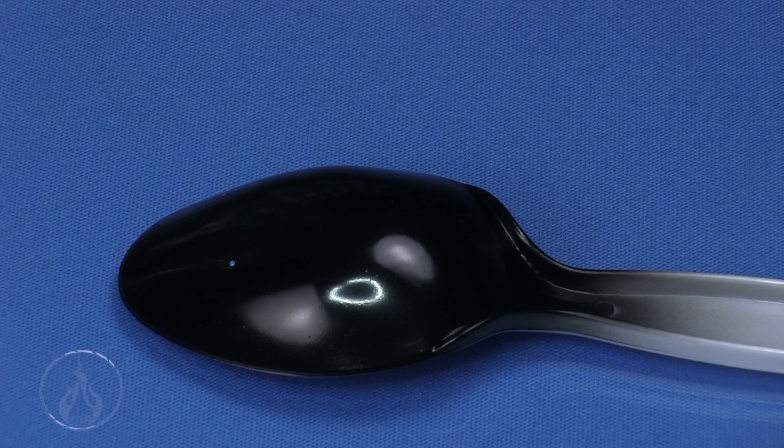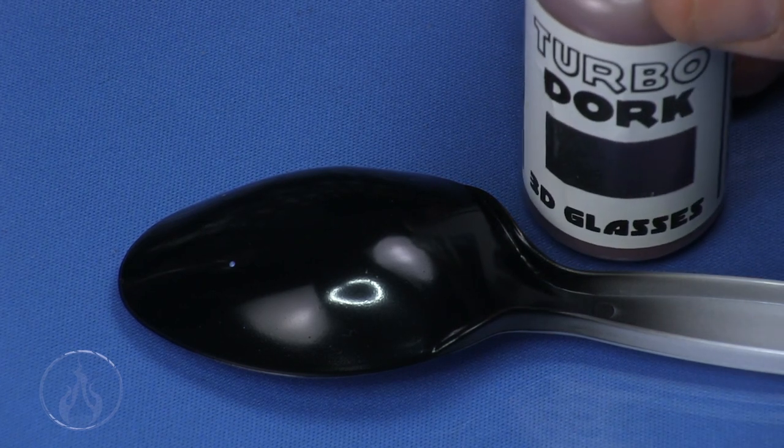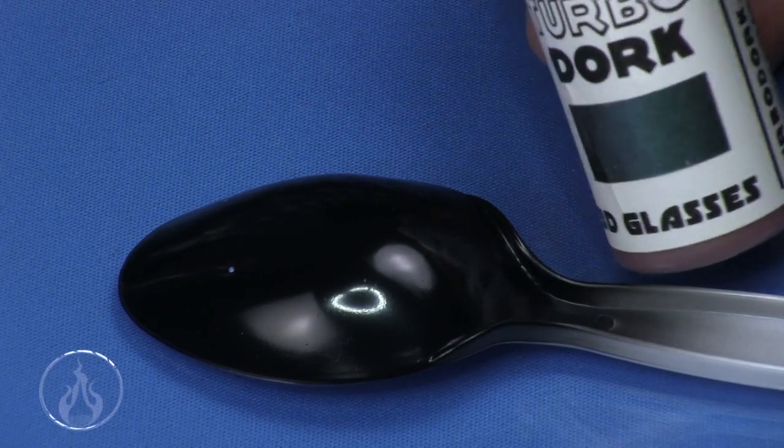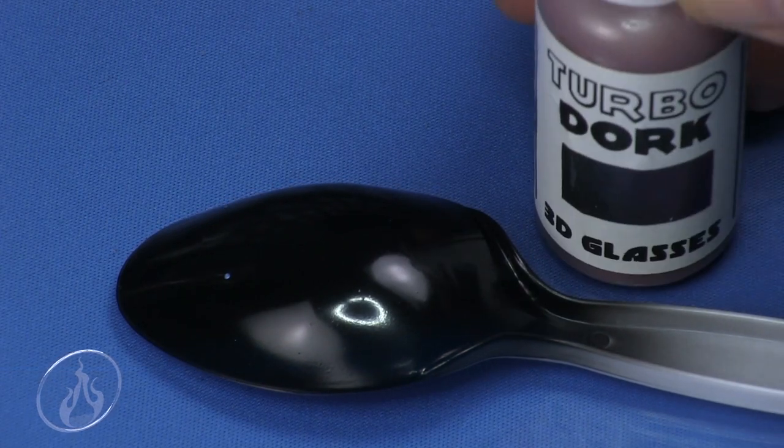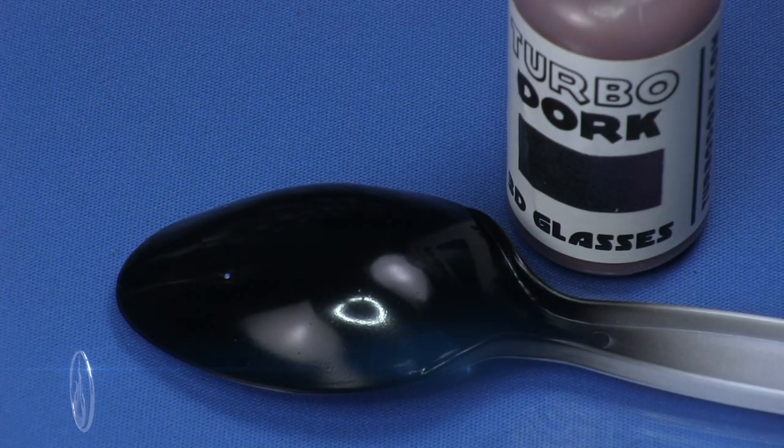Hi there, Chris here with just that tip for you guys. In our continuing look at Turbo Dork paints, I am going to apply 3D Glasses. This is a color shift paint—it doesn't really quite show up on camera here, but I think you guys all realize that by now. This is the older label, their first edition as it were.